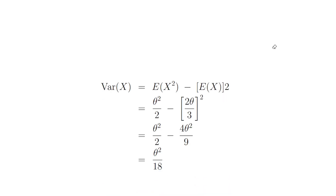Using these results, we can calculate the variance of x using the identity: variance of x equals the expected value of x squared minus the expected value of x, squared. So that is theta squared divided by 2 minus 2 theta divided by 3, squared. That gives theta squared divided by 2 minus 4 theta squared divided by 9. After a little algebraic manipulation, the variance is theta squared divided by 18.